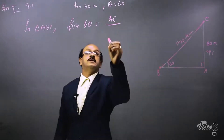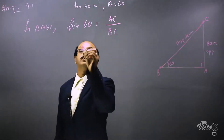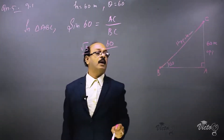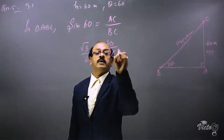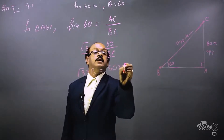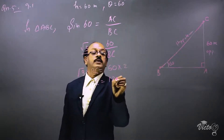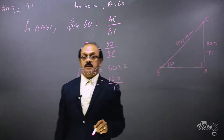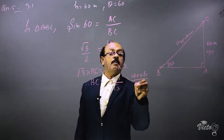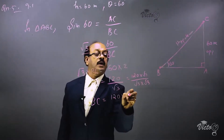The value of sine 60 is root 3 by 2. So root 3 by 2 equals AC divided by BC, where AC equals 60. Cross multiplying: root 3 into BC equals 60 into 2, so BC equals 120 divided by root 3. Rationalizing, multiply numerator and denominator by root 3: BC equals 120 root 3 divided by root 3 into root 3.